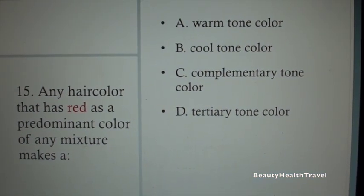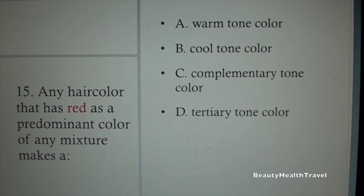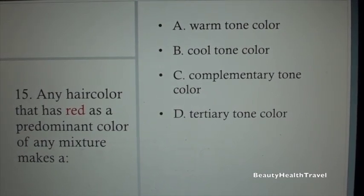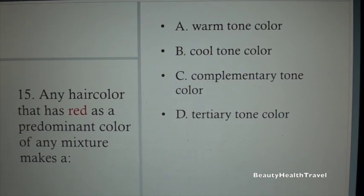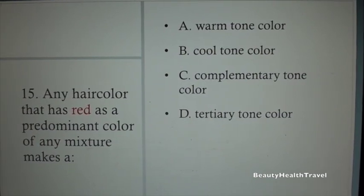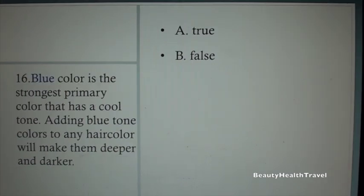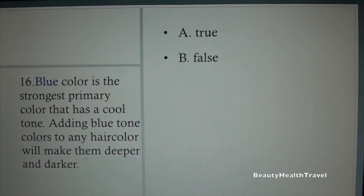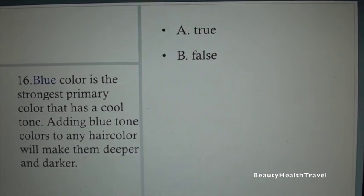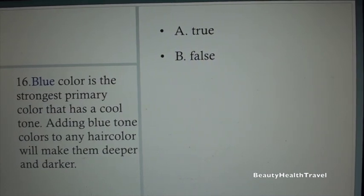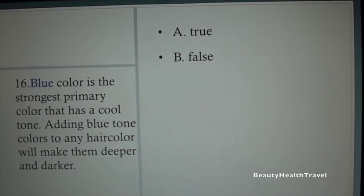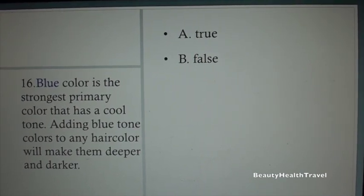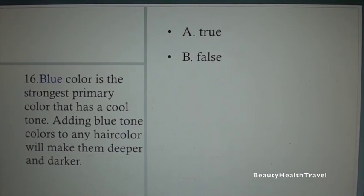Question 14: Any hair color that has blue as a predominant color of any mixture makes a: A. Warm tone color, B. Cool tone color, C. Complementary tone color, D. Tertiary tone color. Question 15: Any hair color that has red as a predominant color makes a: A. Warm tone color, B. Cool tone color.